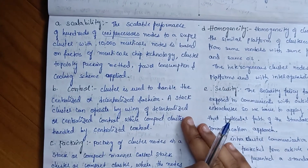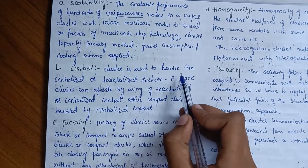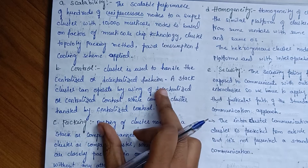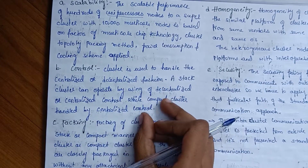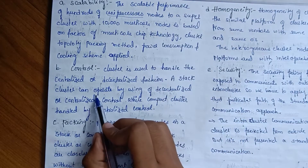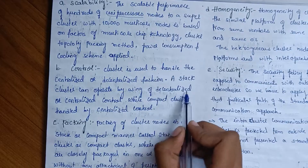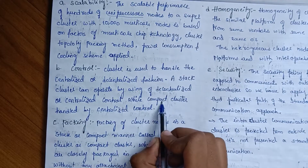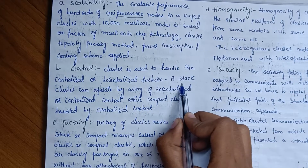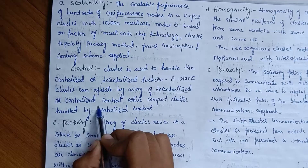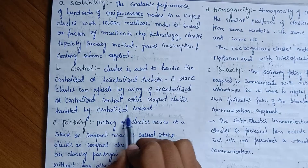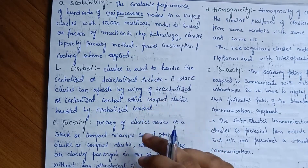The next design objective is control. A cluster can be managed in either a centralized or decentralized fashion. A cluster can operate using decentralized or centralized control. In a compact cluster, only centralized control is used to handle management.